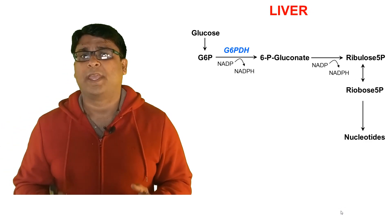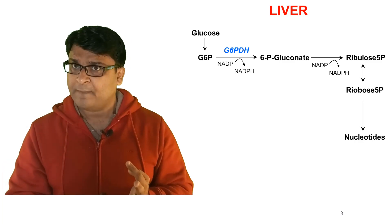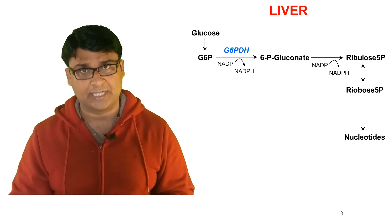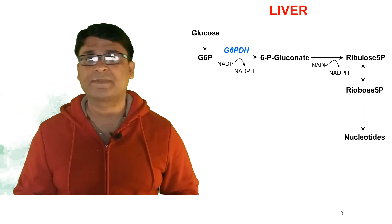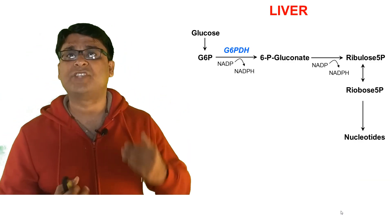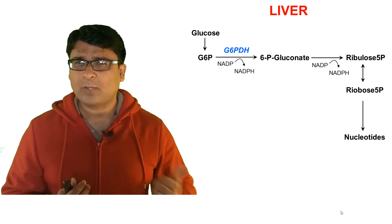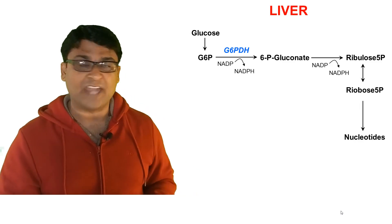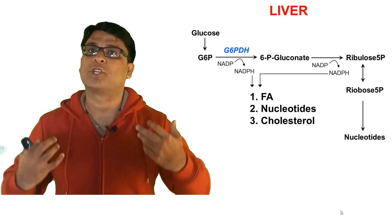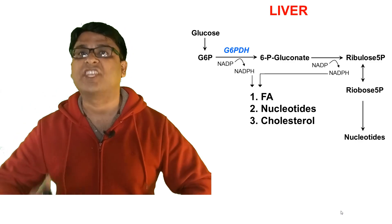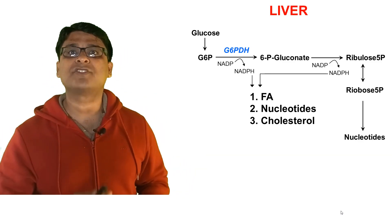An important thing to understand about HMP shunt pathway is what happens with its products in at least three locations: the liver, polymorphonuclear neutrophils, and red blood cells. The HMP pathway begins with glucose, proceeds through glucose-6-phosphate via G6PD, and produces pentose sugar — ribose-5-phosphate — and NADPH. In the liver, NADPH is utilized for formation of fatty acids, nucleotides, and cholesterol. So the liver utilizes HMP shunt pathway for synthesis of biomolecules.